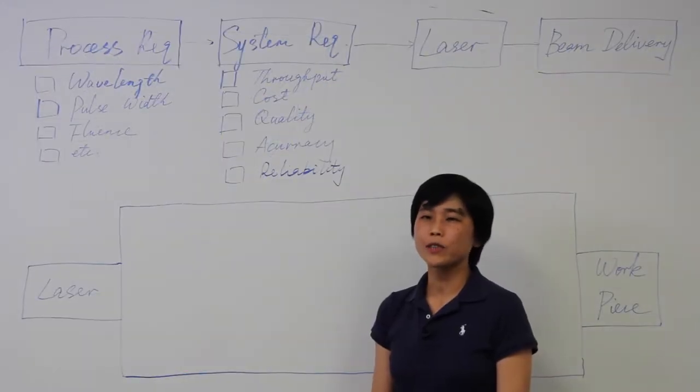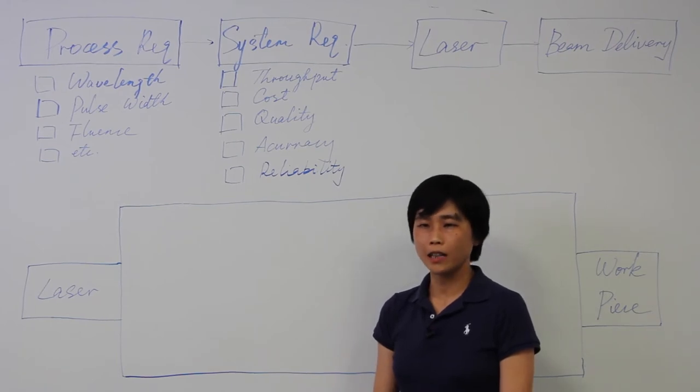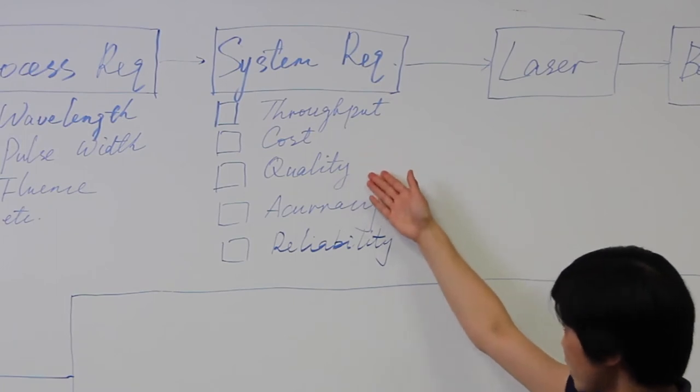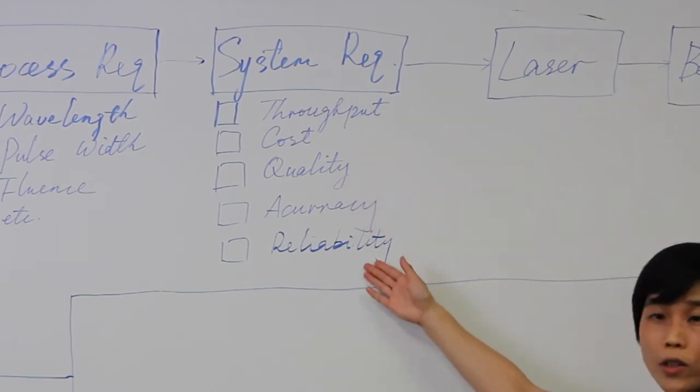System requirement is mostly defined by customer needs. Customer cares most about the throughput, the cost, quality, accuracy, and of course reliability.